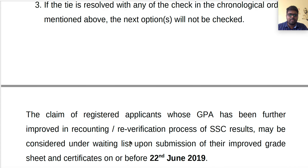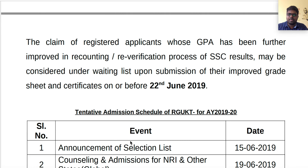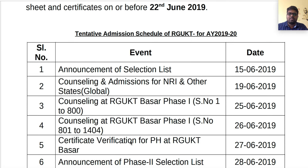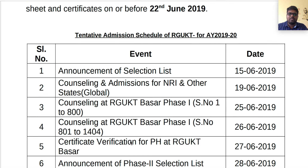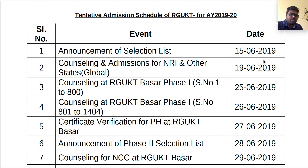These are some dates related to 2019. The tentative admission schedule of RGUKT for academic year 2019-2020: announcement of the selection list of RGUKT on 15 June 2019 was the first release item.